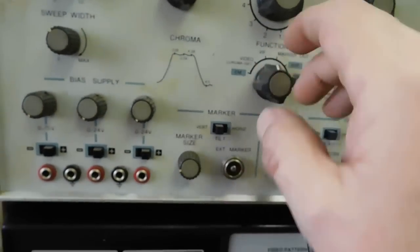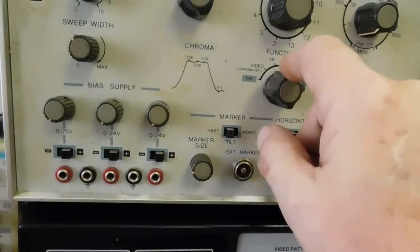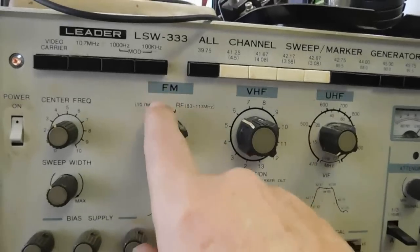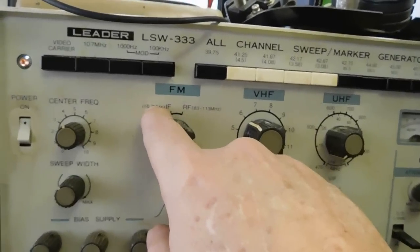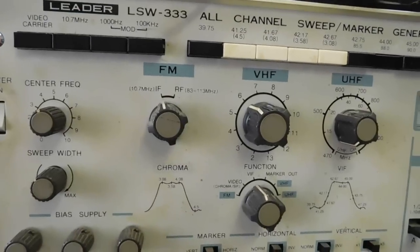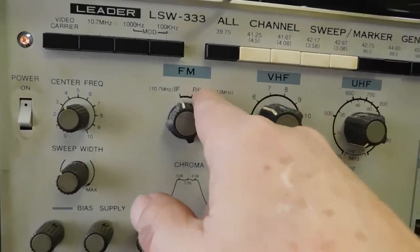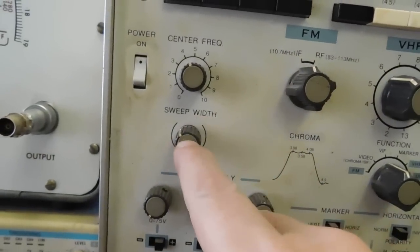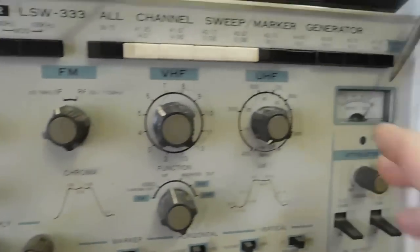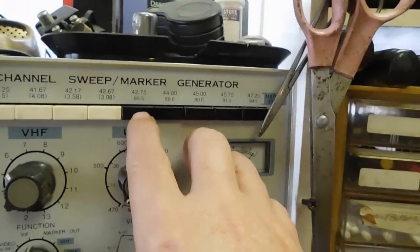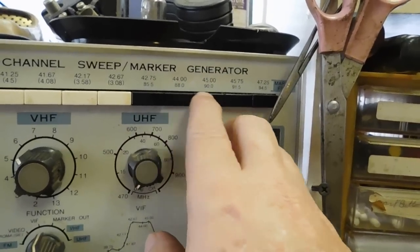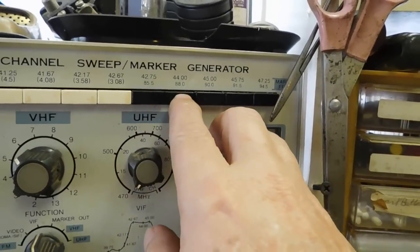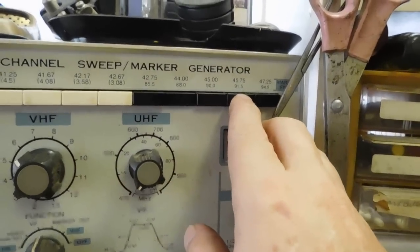And it knows that one's hooked in there. You can also do FM, the IF 10.7 megahertz, or flip it to RF. And then you just use the width here to get the full bandpass. There are a few markers for 85.5, 88, 90, 91.5, and 94.5.